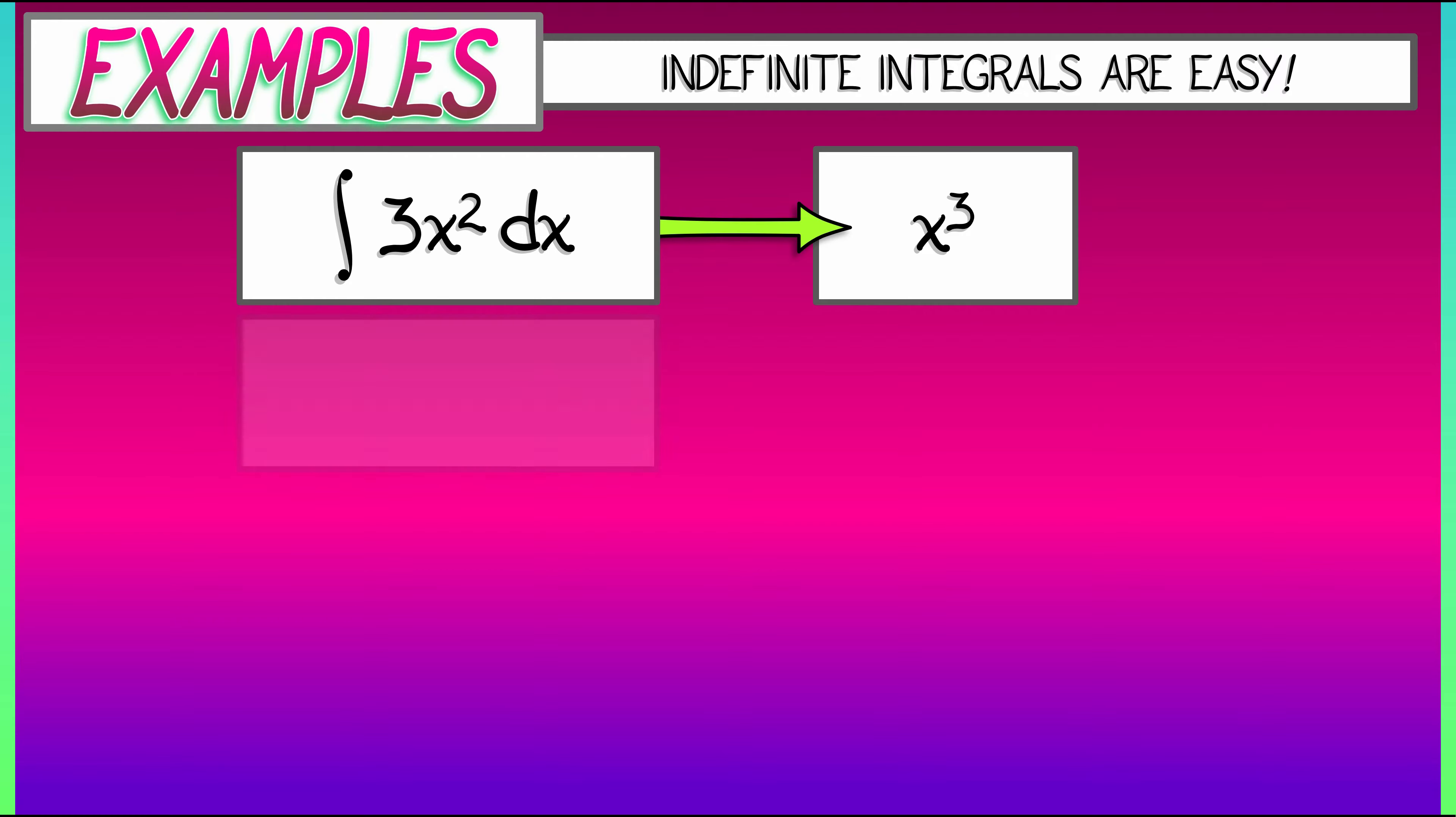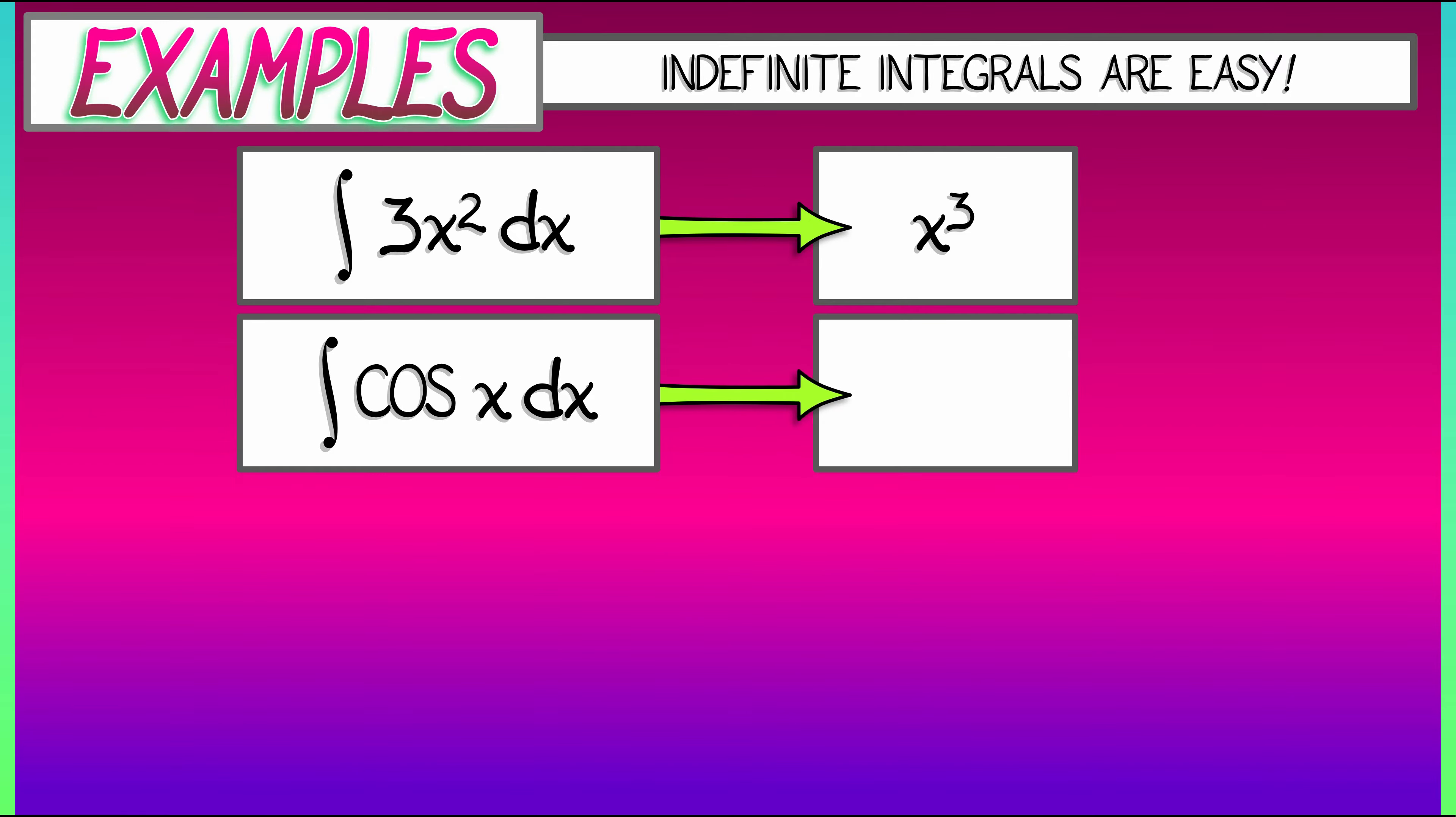What about if we want to anti-differentiate cosine of x? The integral of cosine of x dx equals sine of x. I take the derivative of sine, I get cosine.